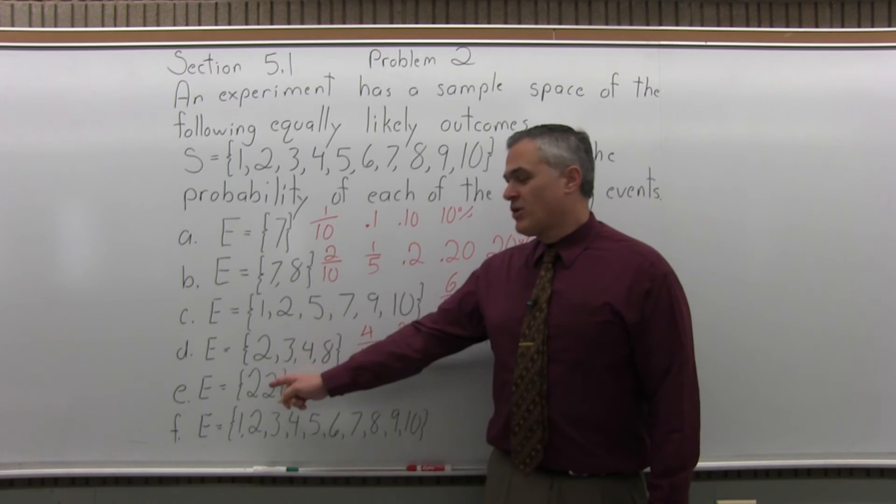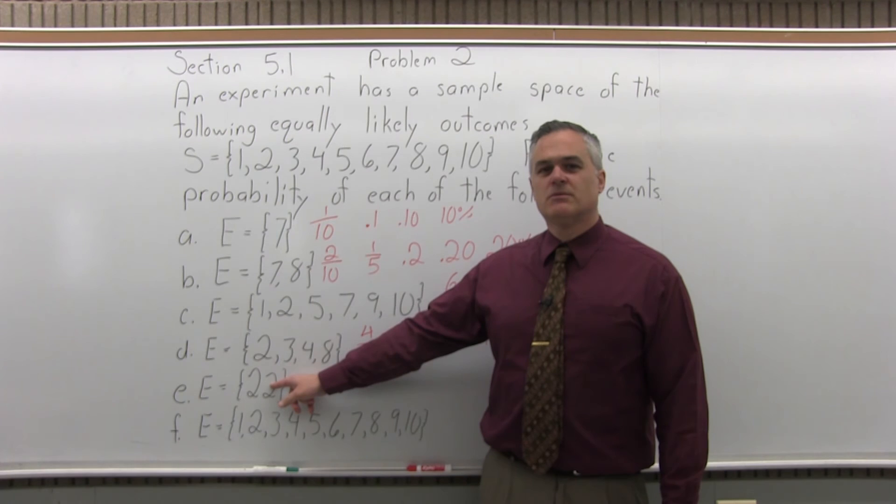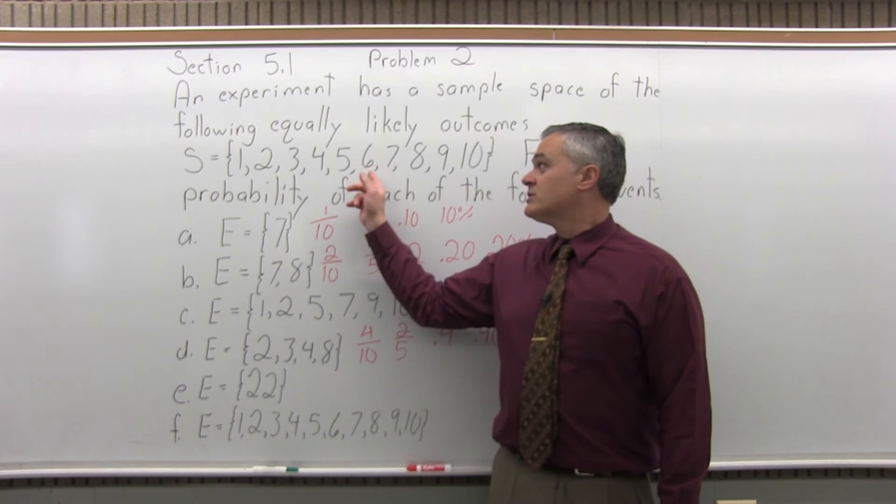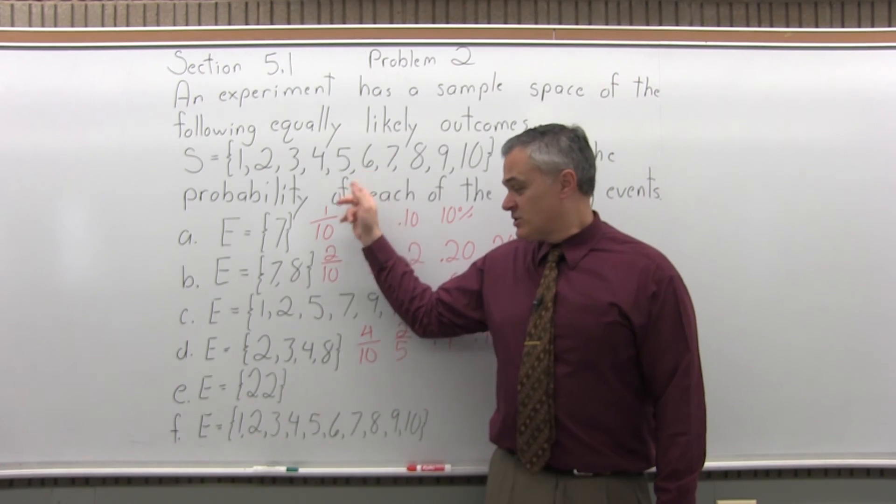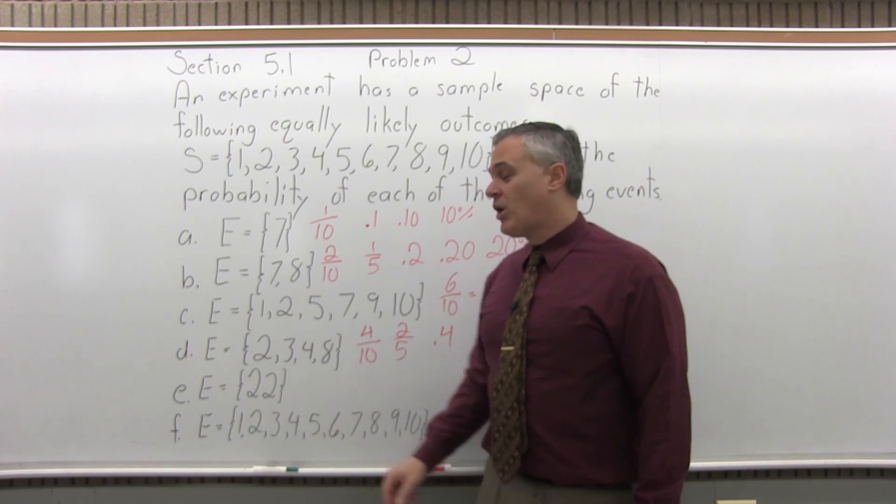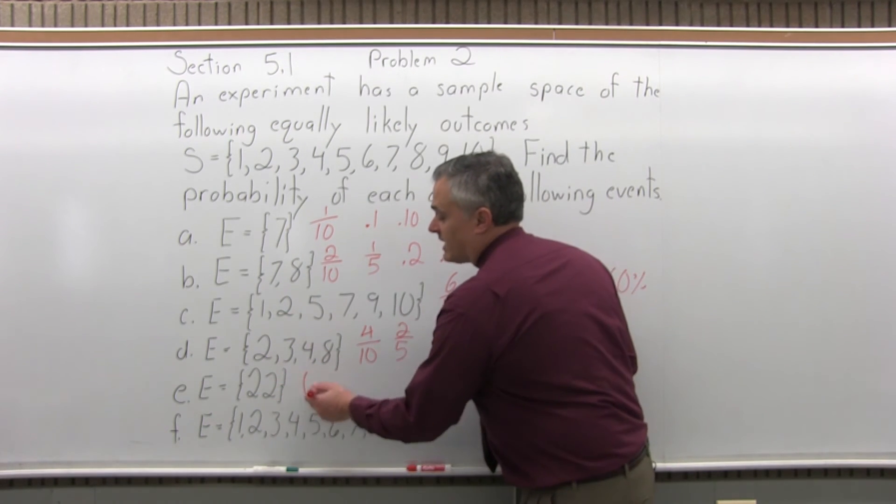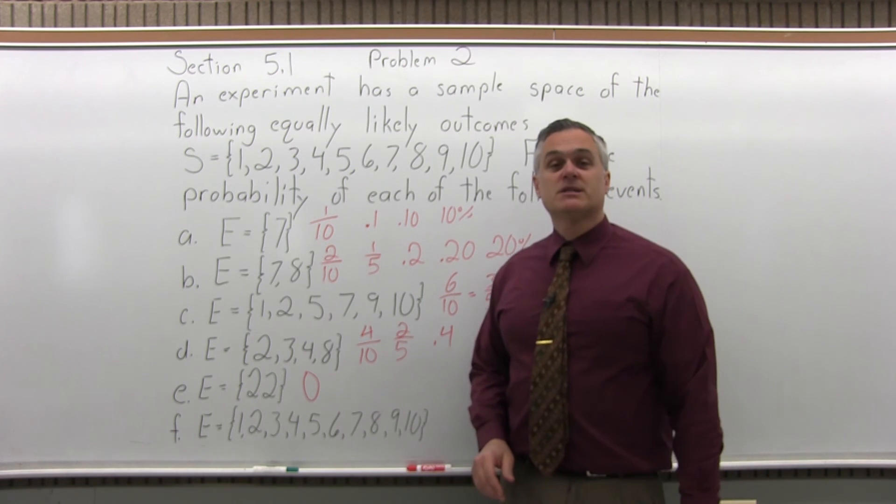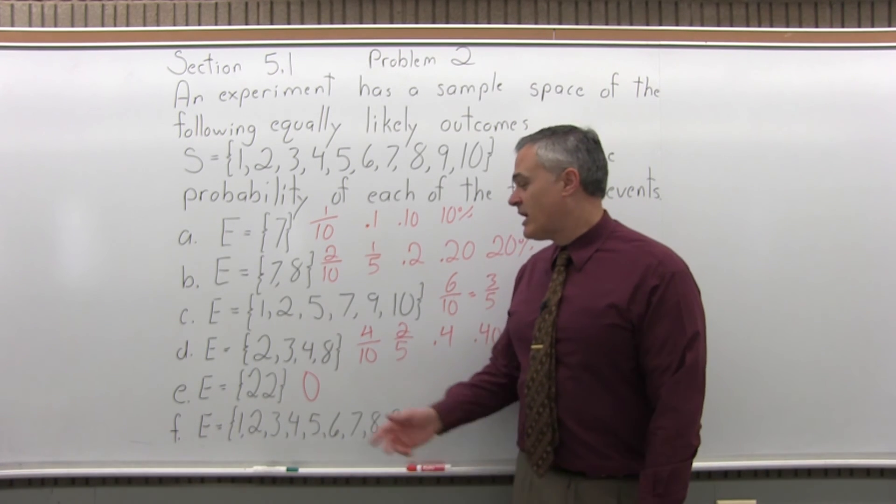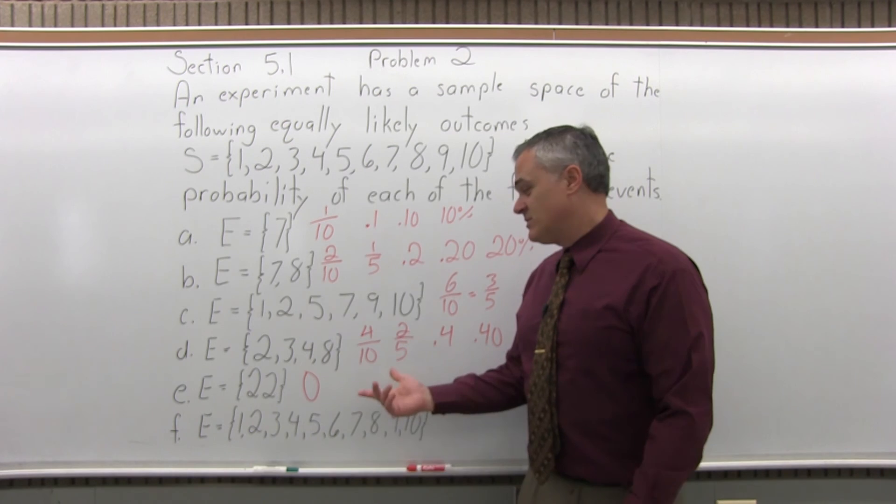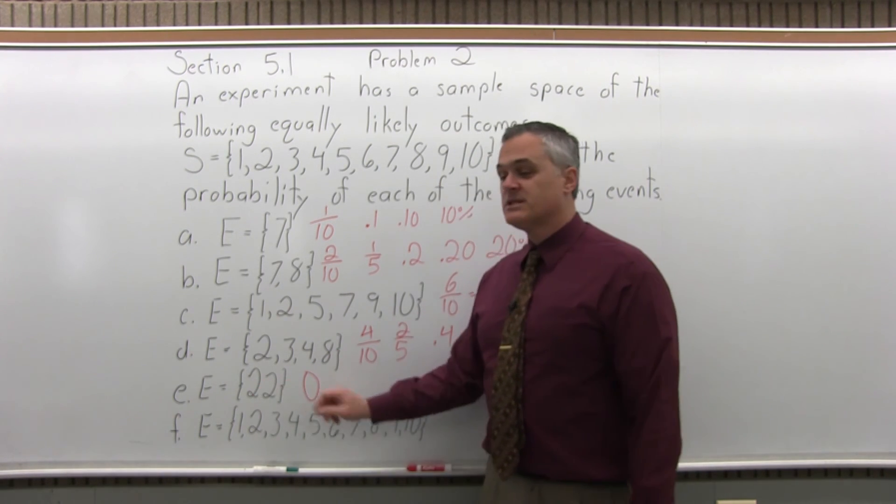E. What's the probability of getting a 22? A 22 is not part of the sample space. It's not one of the outcomes. So you can't get a 22. It's impossible. Well, there's an answer for that. What's the probability of something that's impossible? The probability would be zero. So it's not as ridiculous a question as it seems at first. If you just can't get that outcome, probability is 0.